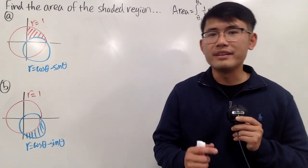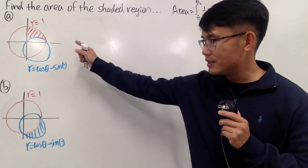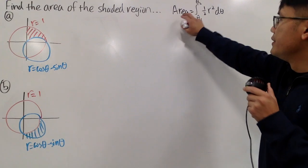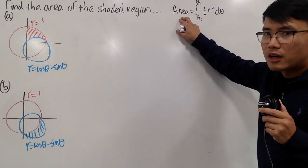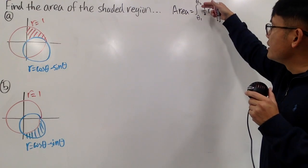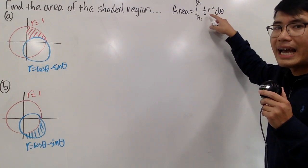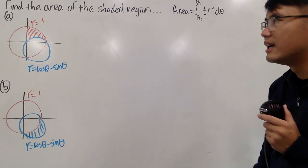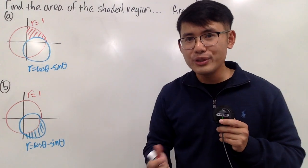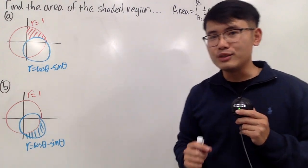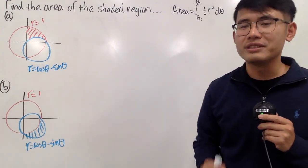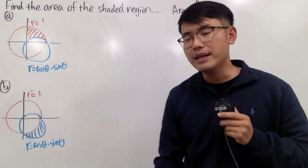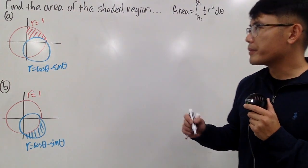In this video, we are going to find the areas of these two shaded regions. Remember, the area of a polar curve is the integral going from theta 1 to theta 2 of one-half r squared d theta. We will also have to do some geometry, and we have to pay attention to the angles. The angles are the hardest part, so here we go.